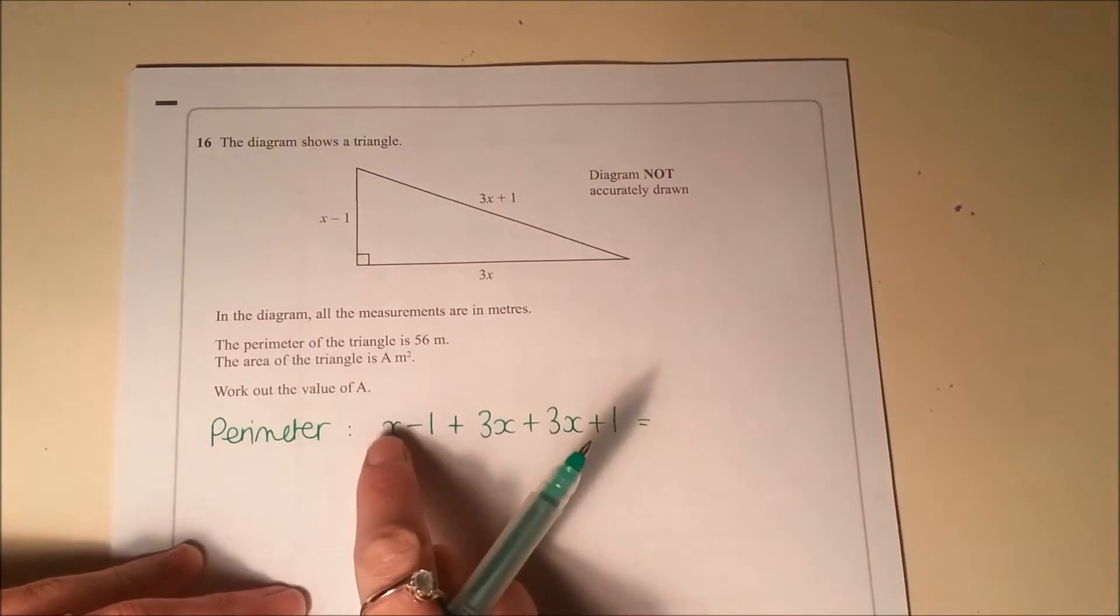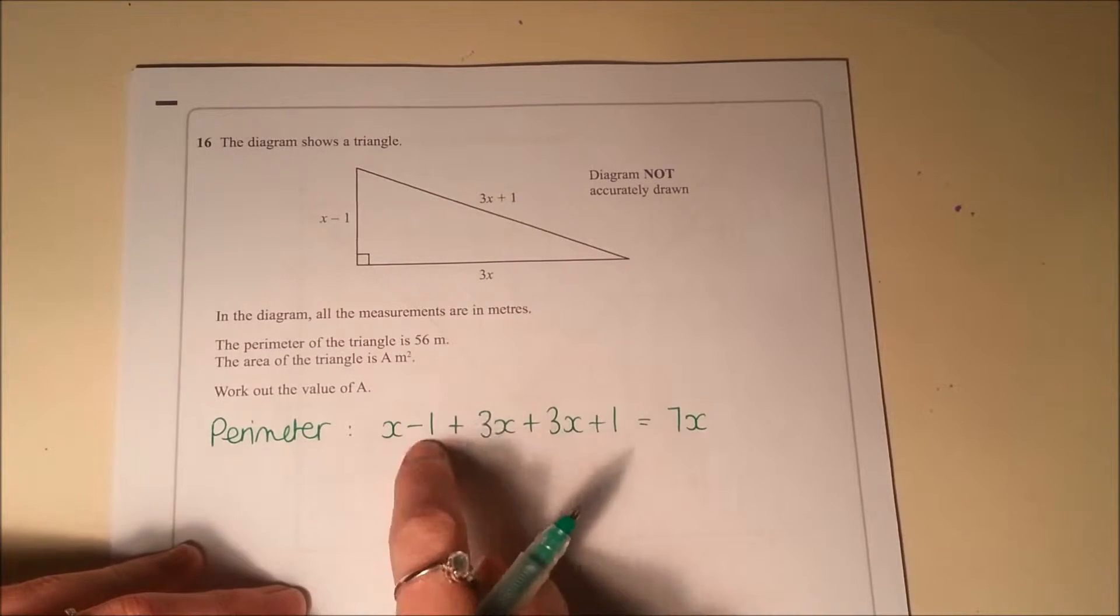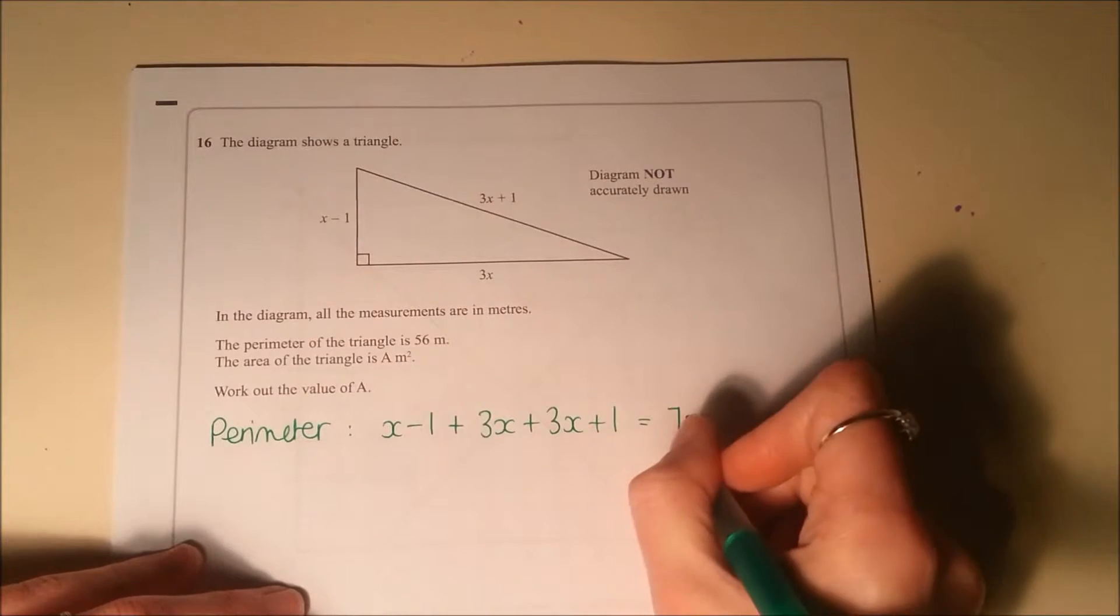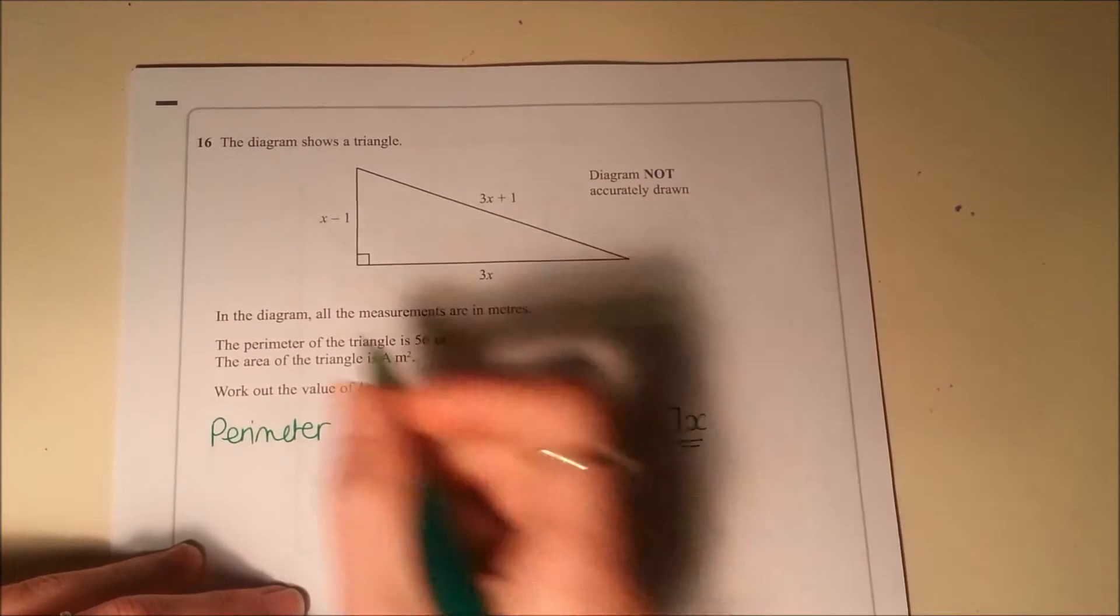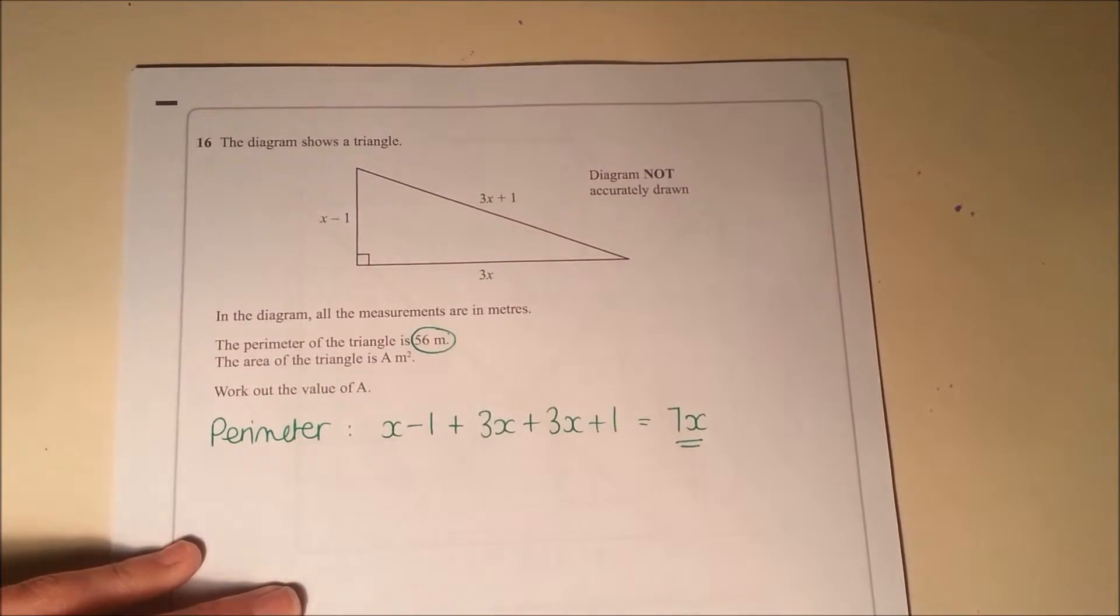And if I simplify that, I've got x plus 3x plus 3x, so that's 7x, and then minus 1 plus 1, so that's nothing. So an expression for the perimeter is 7x, and if I re-read that question, that's equal to 56 meters.